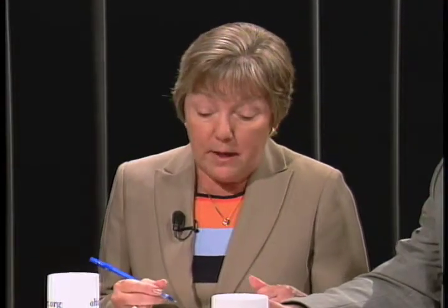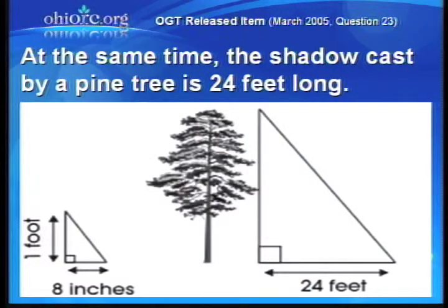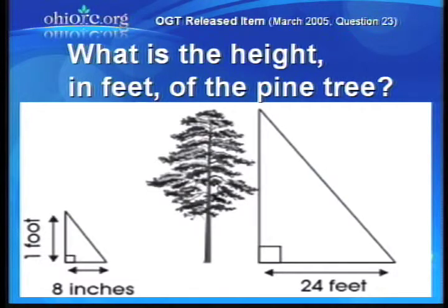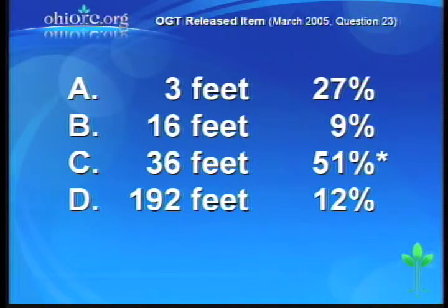Similarly, make sure those ratios have the same units. Is there a problem that deals with the unit issue? We do have one from the 2005 OGT. The shadow cast by a one-foot ruler is 8 inches long. At the same time, a shadow cast by a pine tree is 24 feet long. What is the height of the pine tree? 51% did get this correct, but you would have expected more. And 27% chose A, which was 3 feet — it does not make sense for a pine tree.